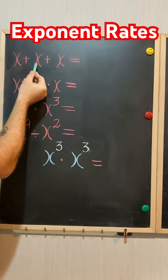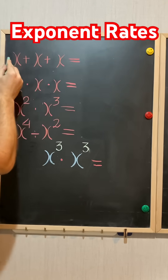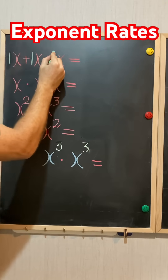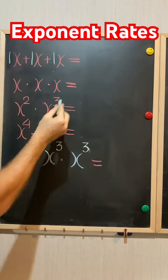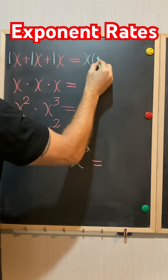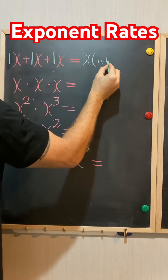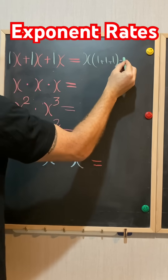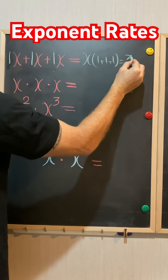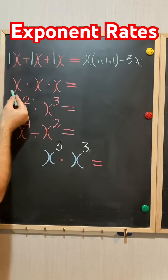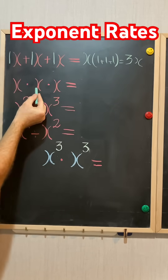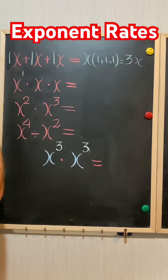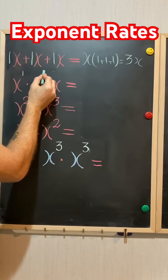x plus x plus x, which means 1x plus 1x plus 1x. It's gonna be x times 1 plus 1 plus 1, equals 3x.